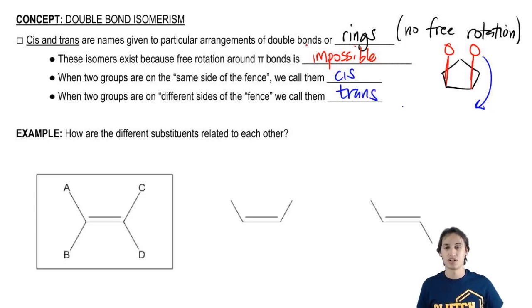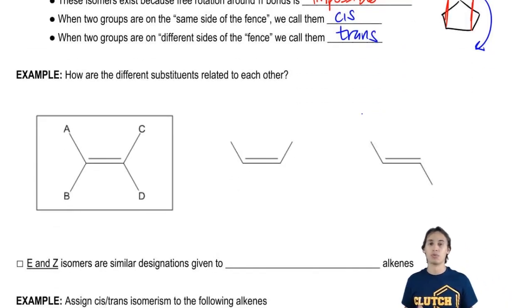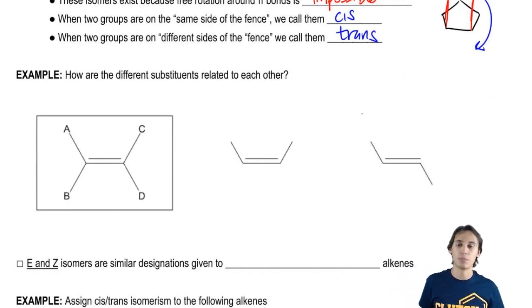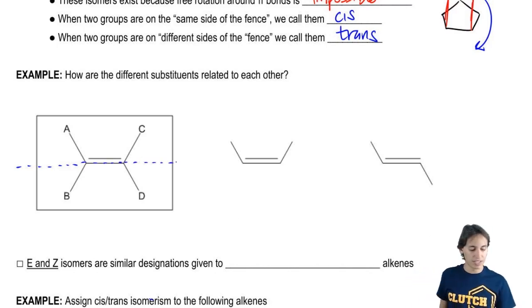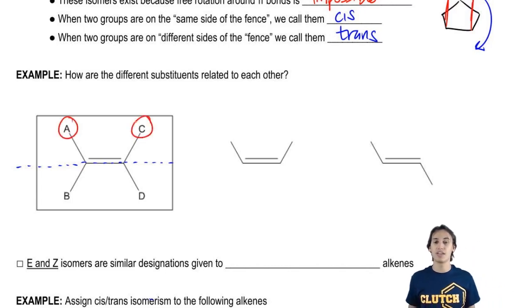So what kind of mysterious fence am I talking about? Well, let's say we have a double bond. The way that I like to split it up is I like to draw a dotted line right through the middle of the double bond. So that double bond is my fence. And then what I say is how are these groups related to each other on that double bond? So for example, if I wanted to compare A and C, are they on the same side of the fence or different sides? Well, they're both on the same side. They're both on the top side. So the relationship between A and C would be cis.